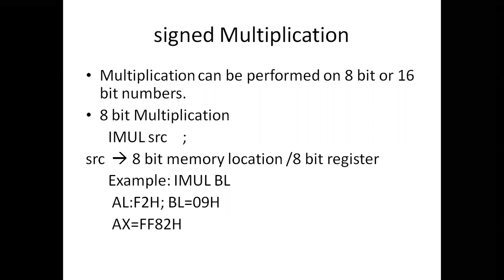In case of 8-bit multiplication, if two 8-bit data are involved, one operand is implied to be in the AL register and the other operand src can be an 8-bit memory location or register. The result is stored in the AX register. For example, IMUL BL, where AL = F2h and BL = 09h.